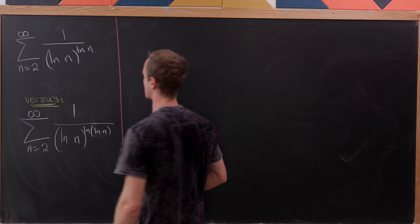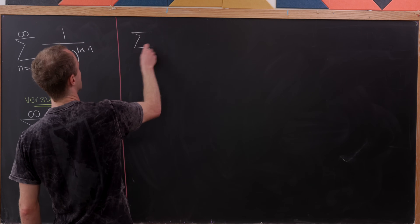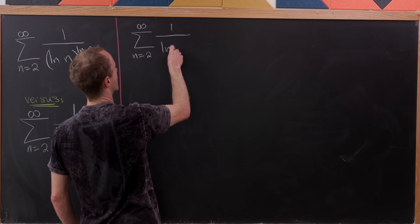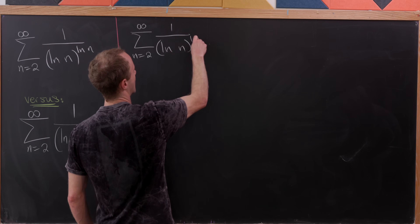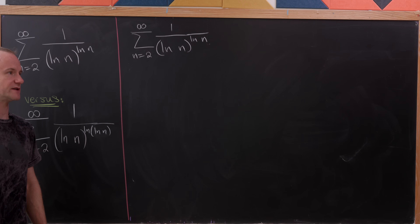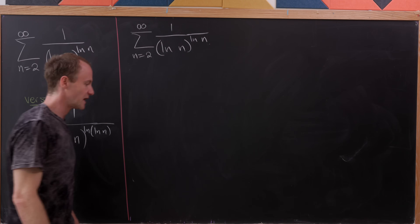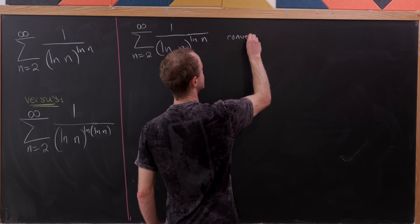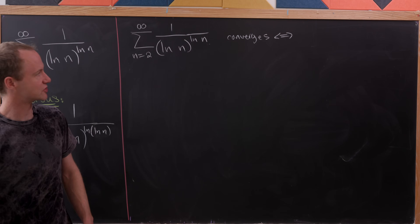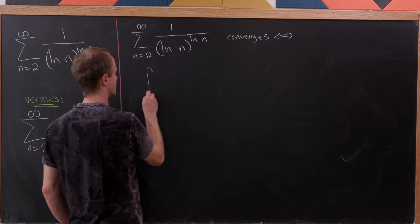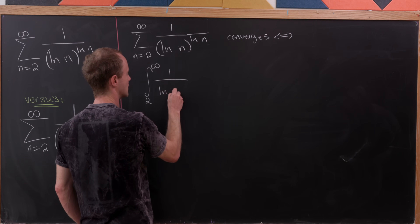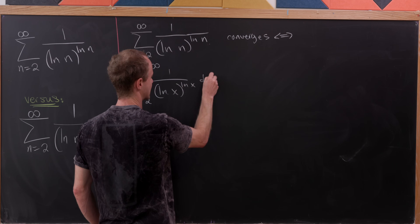So let's start with this first one. We've got the sum as n goes from 2 to infinity of 1 over (log n) to the power (log n). We need to start at 2 because log(1) = 0. This converges by the integral test if and only if the integral from 2 to infinity of 1 over (log x) to the power (log x) dx converges.